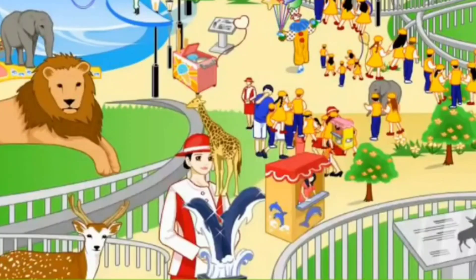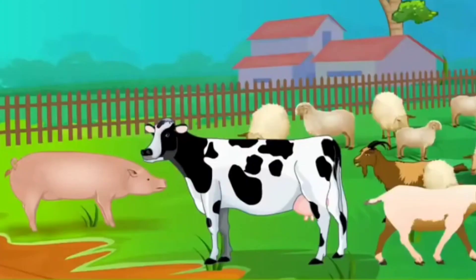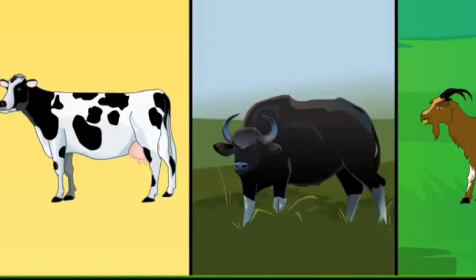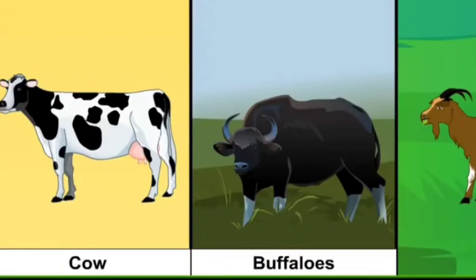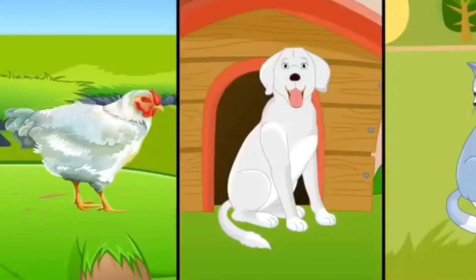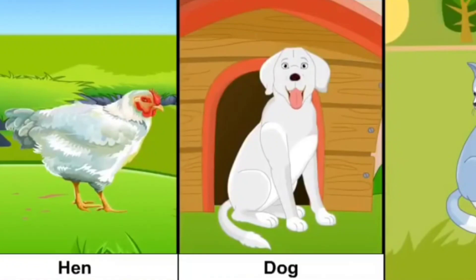We can see these animals in a zoo also. Some of the domestic animals are cows, buffaloes, goats, bulls, horses, donkeys, camels, parrots, hens, dogs, etc.